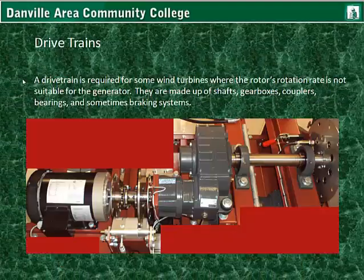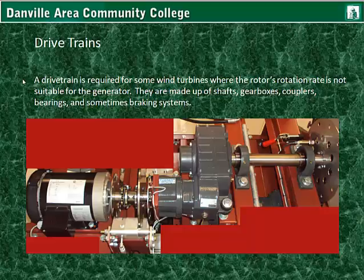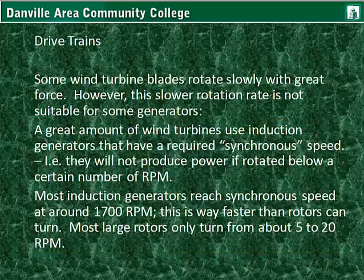A drivetrain is required for some wind turbines where the rotor's rotation rate is not suitable for the generator. They are made up of shafts, gearboxes, couplers, bearings, and sometimes braking systems. Some wind turbine blades rotate slowly with great force — that is to say torque — however this slower rotation rate is not suitable for some generators.